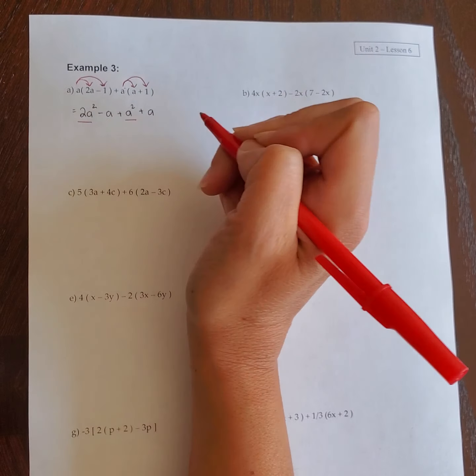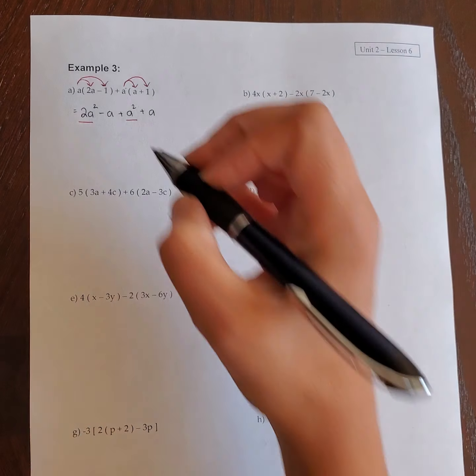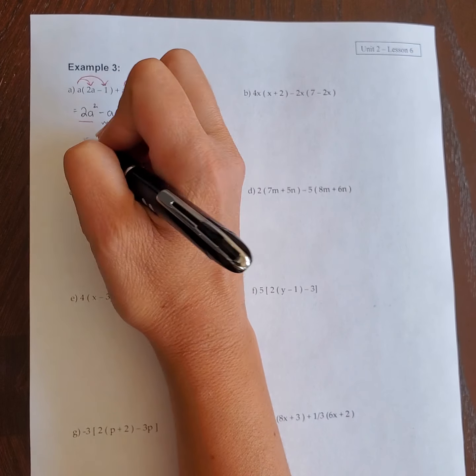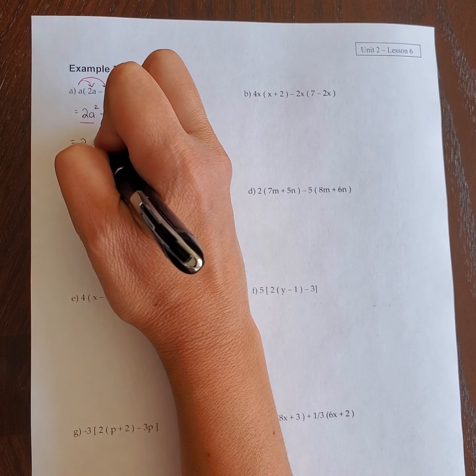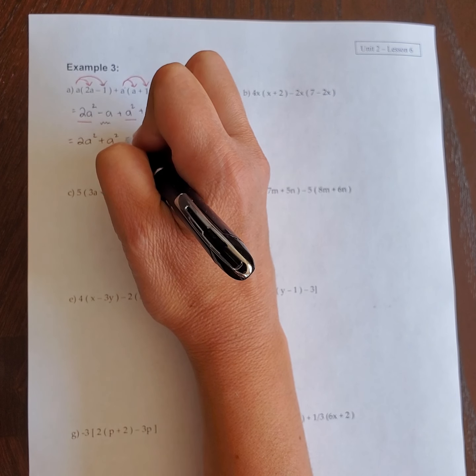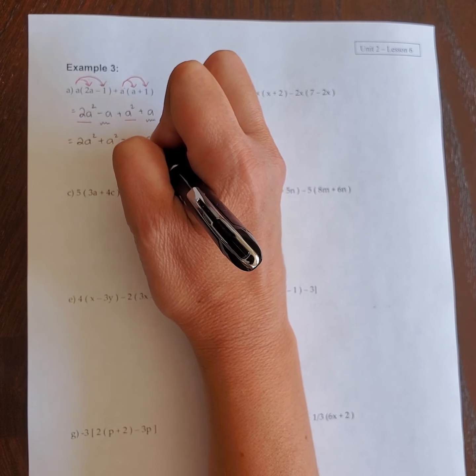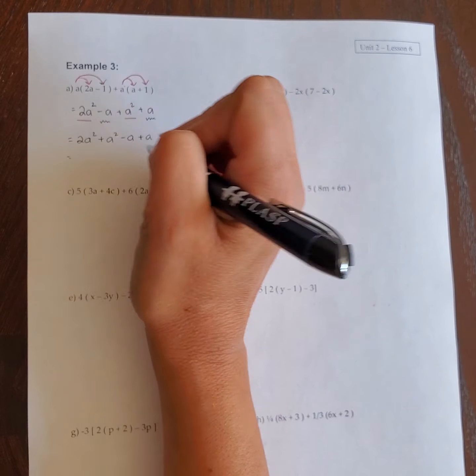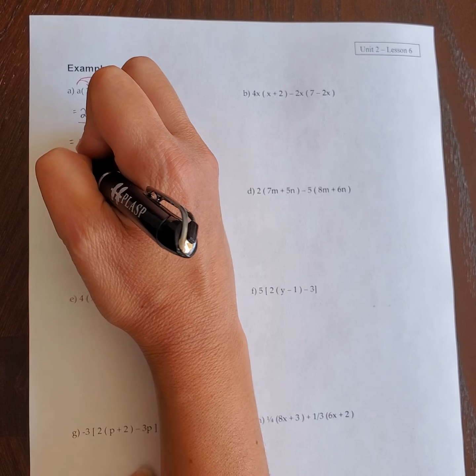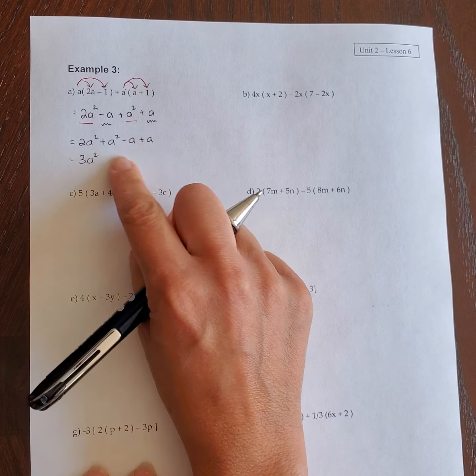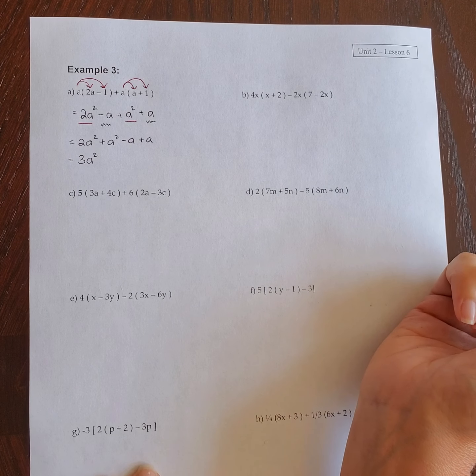We've got an a squared and an a squared there, and a negative a and a positive a. So then I rewrite it, 2a squared plus a squared, take away a plus a. This is like saying 2 plus 1. So 2a squared plus 1a squared gives me 3a squared, and negative a plus a equals 0.